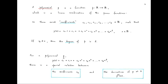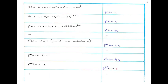Suppose that we are given a degree-d polynomial. It turns out that there is a special relationship between the coefficients c_k of this polynomial and the successive derivatives of p at 0 — that is, p^(k)(0) for k equal to 0 to d. Let us see what this relationship is.